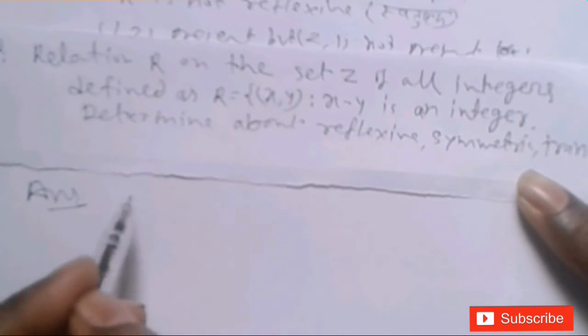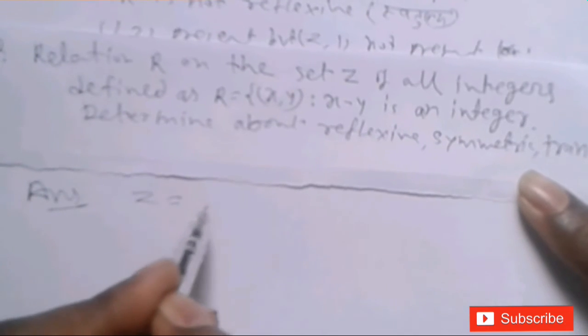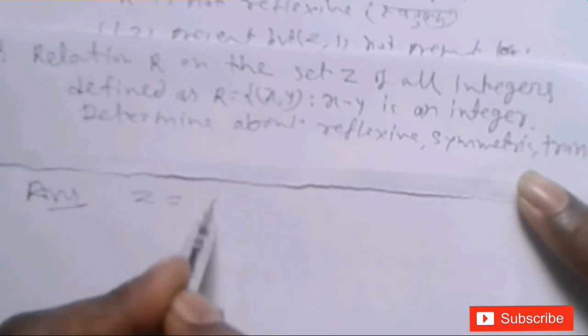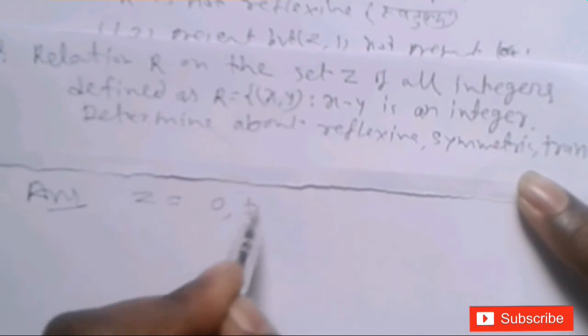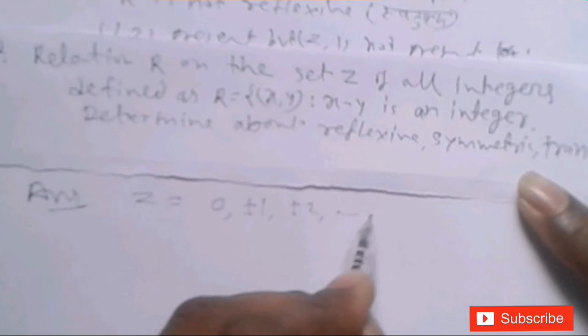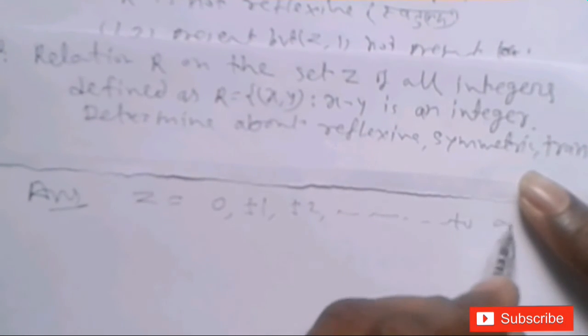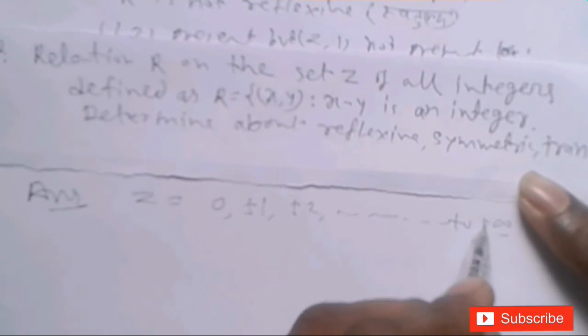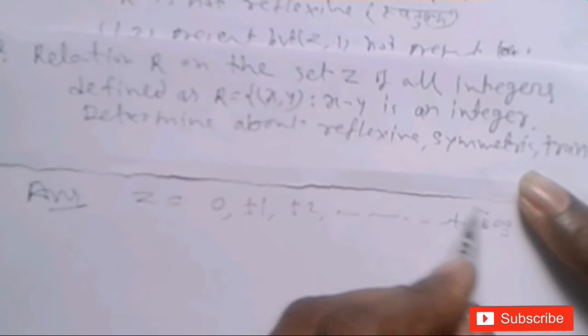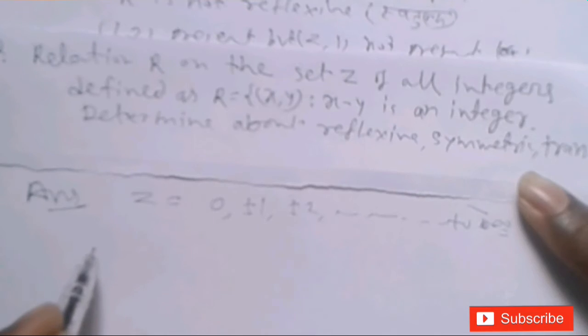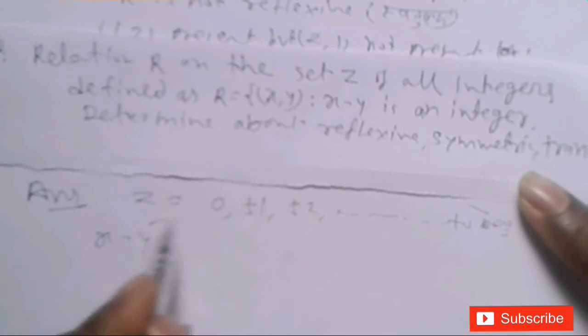Question में Z means: 0, ±1, ±2, ... to infinite दोनों sides. यहाँ पर X minus Y से हम decide करेंगे।